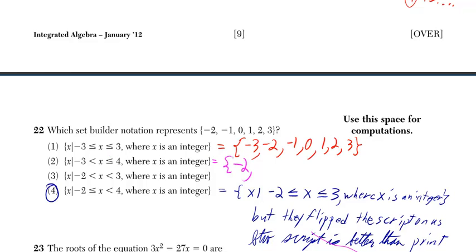Okay, negative 1 would work. So with 0, 1, 2, 3, and also 4, because it says it can be less than or equal to 4.